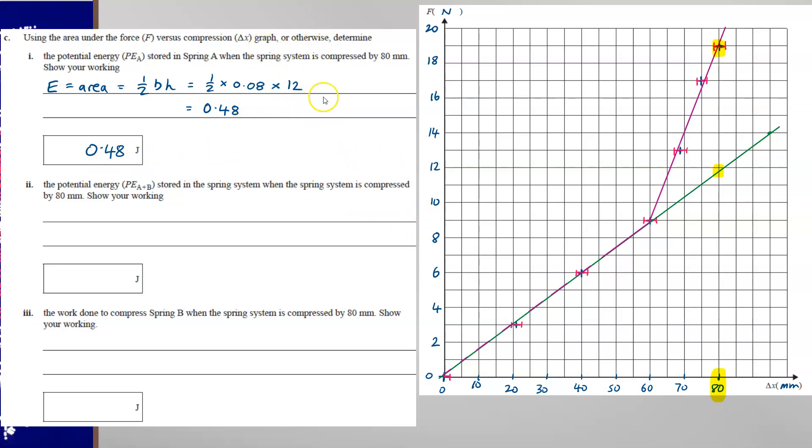Now it says or otherwise. The other way to calculate this would be to use a half Kx squared. K we calculated before it was 150. Therefore you get the same answer.